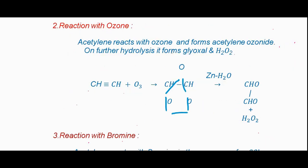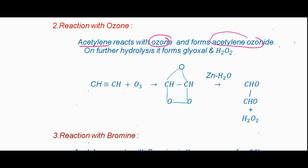The second chemical property is reaction with ozone. Acetylene reacts with ozone to form an unstable acetylene ozonide. On further hydrolysis in the presence of zinc, it gives glyoxal and hydrogen peroxide. Acetylene plus ozone gives acetylene ozonide; on hydrolysis, the rearrangement produces glyoxal.